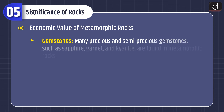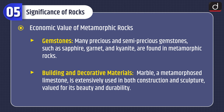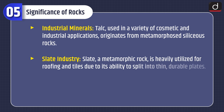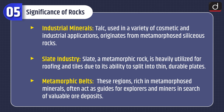Economic value of metamorphic rocks: Gemstones — many precious and semi-precious gemstones such as sapphire, garnet, and kyanite are found in metamorphic rocks. Building and decorative materials — marble, a metamorphosed limestone, is extensively used in construction and sculpture, valued for beauty and durability. Industrial minerals — talc, used in cosmetic and industrial applications, originates from metamorphosed siliceous rocks. Slate, a metamorphic rock, is heavily utilized for roofing and tiles due to its ability to split into thin, durable plates. Metamorphic belts, rich in metamorphosed minerals, often guide explorers and miners in search of valuable ore deposits.